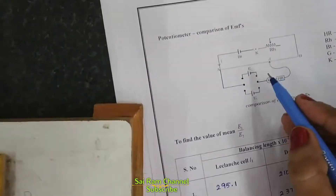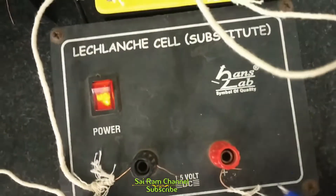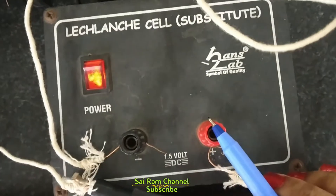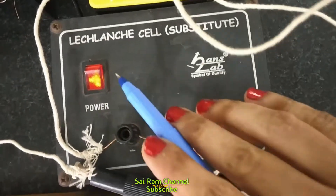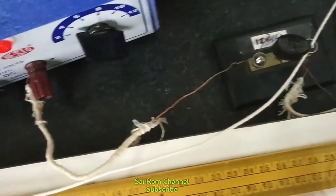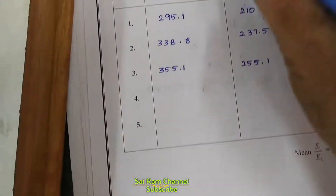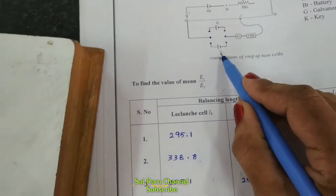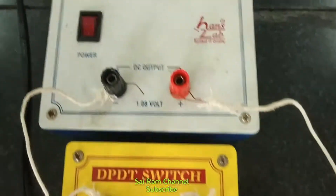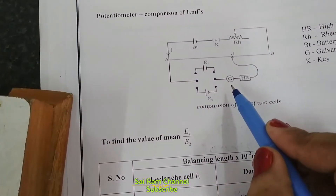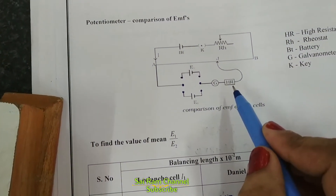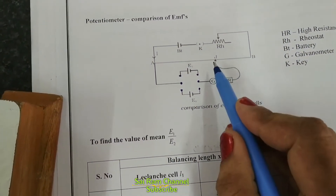E1 is the Neclange Cell. This is its positive terminal and this is its negative terminal. E2 is the Daniel Cell. G is the Galvanometer. HR is High Resistance. J is the Jockey.